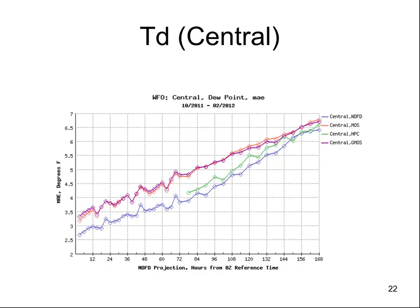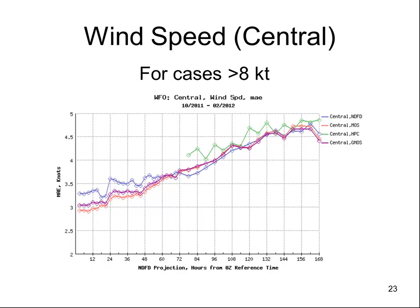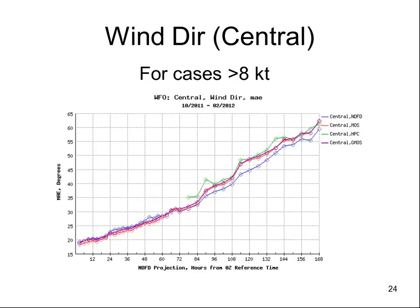Dew points for Central Region are also quite good compared to guidance — better than HPC, except in the very end periods, and only marginally so. Central Region is the winner here. Wind speeds are pretty well clustered — that's an area where we can maybe focus some energy on improving our tools to do a little better. HPC is the outlier on wind speed; they're definitely recognizing that problem. Wind direction — Central Region is the winner on this one.